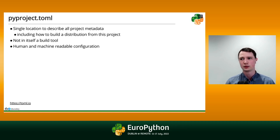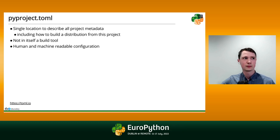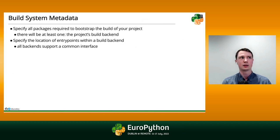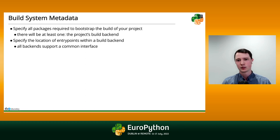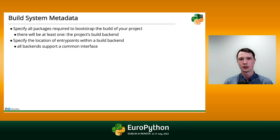Choosing to use pyproject.toml is something you can do and should do for new projects, but it's not a choice of how to build your project. So what are we going to put inside of pyproject.toml? The first thing is some build system metadata. We're going to have to choose a builder, because in Python, there's really no way to build a Python distribution these days without a third-party dependency. The language itself can't do it for you — you have to have something else installed beyond just Python.